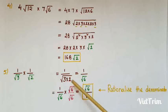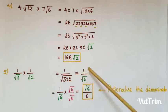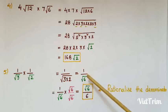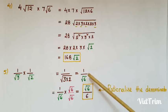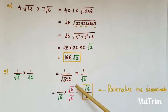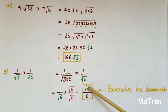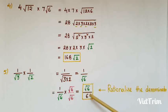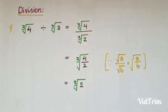The next example is (1/√3) × (1/√2) = 1/√(3×2) = 1/√6. Since the denominator contains an irrational number, we must rationalize the denominator. The rationalization factor is √6, so multiply numerator and denominator by √6 to get √6/6.